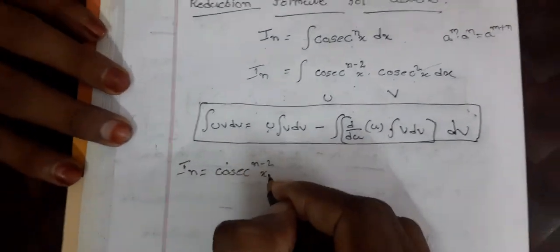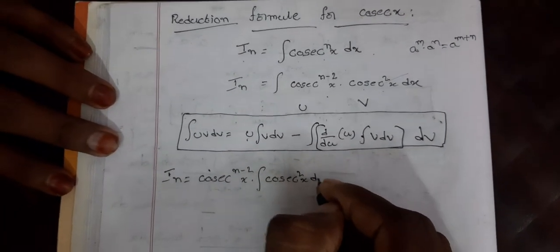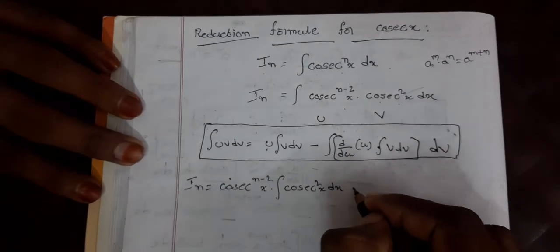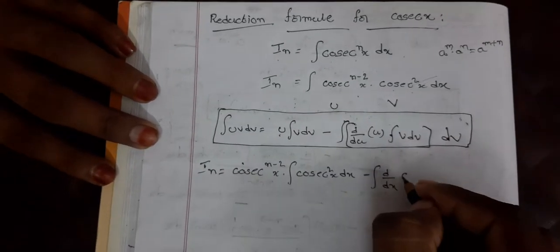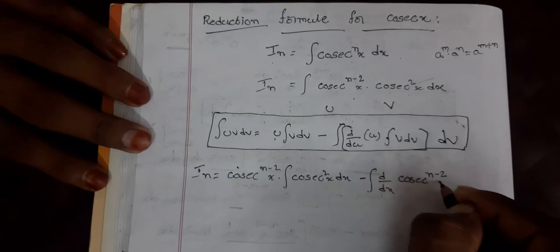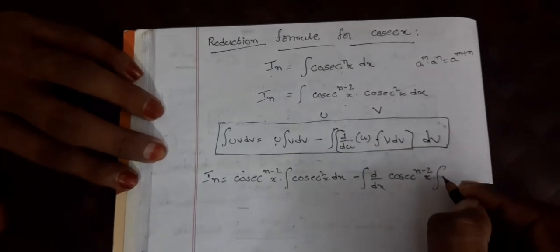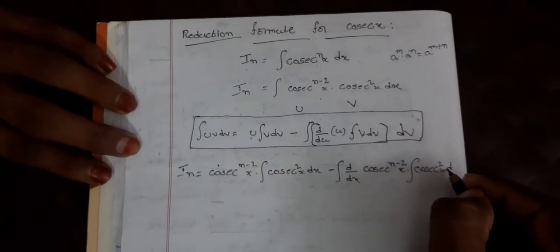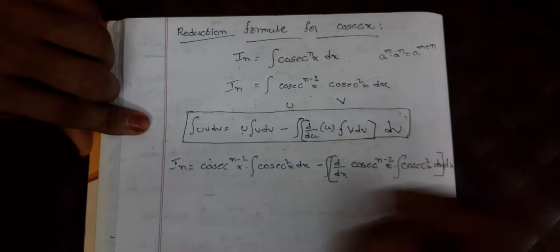Applying the formula: I_n = cosecant^(n-2)(x) [taken as u] times the integral of cosecant²(x) [taken as dv], minus the integral of d/dx[cosecant^(n-2)(x)] times the integral of cosecant²(x) dx, whole term.